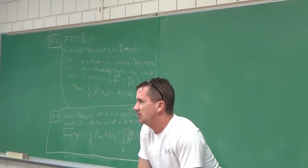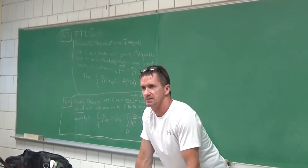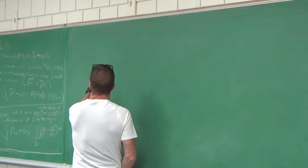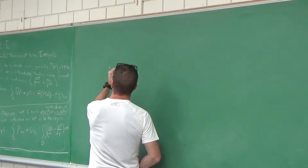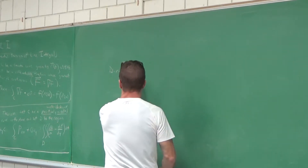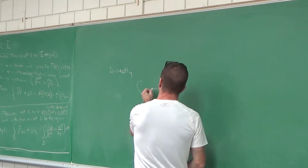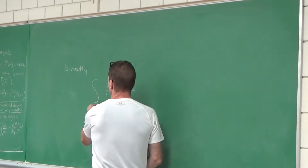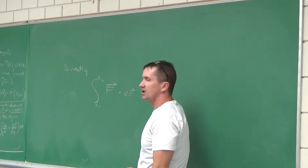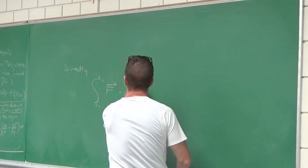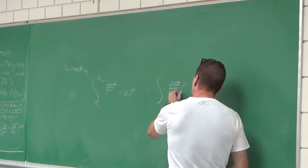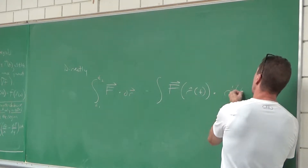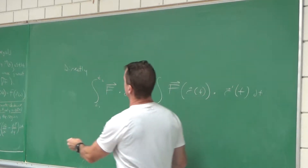Everything we've done so far has been evaluating line integrals directly. Every line integral we've evaluated, we did F dot dr, going from some value of t to another value of t in terms of the parametric. We set it equal to F composed of r of t, and we did the dot product with r prime of t dt.